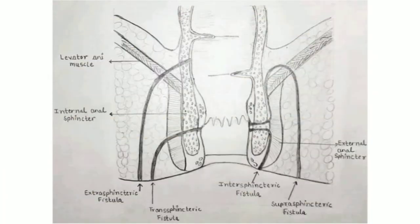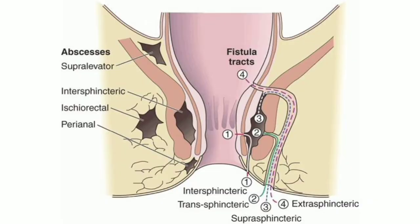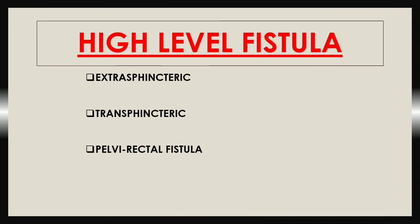Here in this diagram we can see the low level fistulas. High level fistulas open into the anal canal at or above the anorectal line. These are again divided into three types: first, extrasphincteric or supraelevator type; second, transsphincteric type; and third, pelvic rectal fistula.